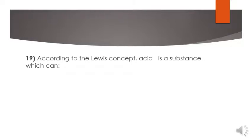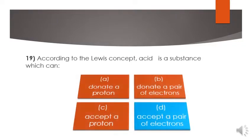MCQ 19: according to Lewis concept, acid is a substance which can accept a pair of electrons. B option is the correct option for MCQ number 19.